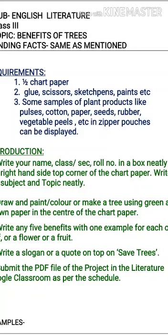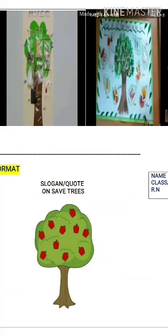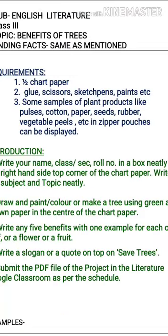First I will tell you how to do the project. For doing the project you need certain things: a half chart paper of any color, glue, scissors, sketch pens or crayons. You also need some samples of plant products like pulses, grains, cotton, paper, seeds, vegetable peels. You can put these things inside a zipper pouch for displaying — it will look nice.